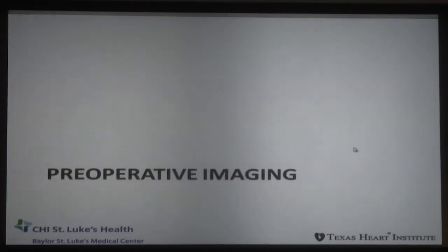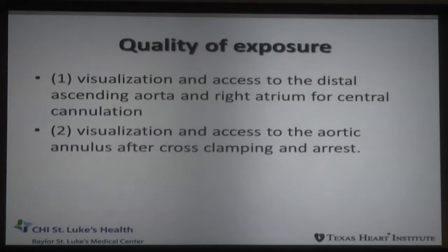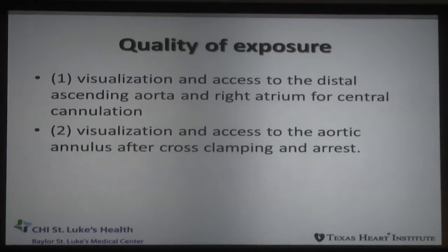This brings us to a concept I like a lot: preoperative imaging. How can we level the playing field and make this relatively complex concept more user-friendly for anyone approaching it? This is where preoperative imaging comes into play — to plan the procedure and select the right procedure for the right patient. Ideally, you want visualization and access to the distal ascending aorta and the right atrium for central cannulation. If you're looking at doing a mini-sternotomy and the anatomy is not going to be ideal — if the aorta and atrium will be far away — you should change your approach because you need safe cannulation. You also need to be able to visualize and access the aortic annulus after you clamp and arrest.